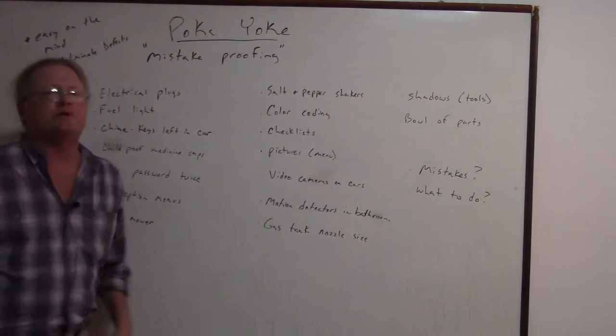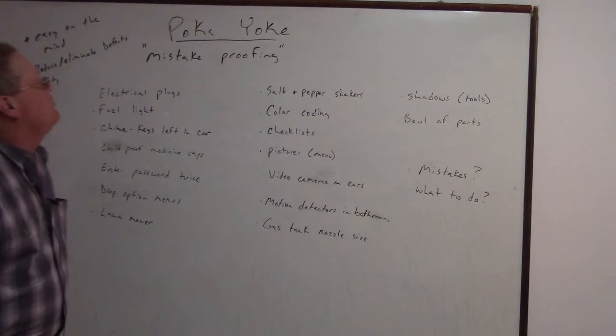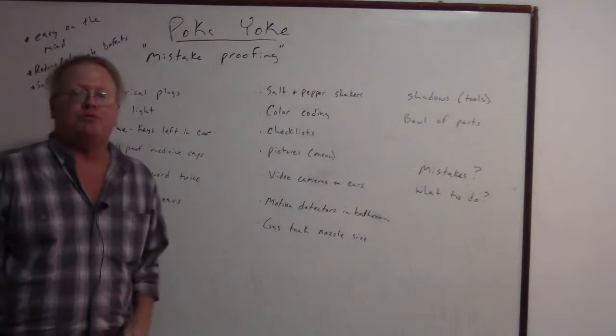Our next Japanese tip is poka-yoke. I hope I'm pronouncing that right. Poka-yoke means mistake proofing.